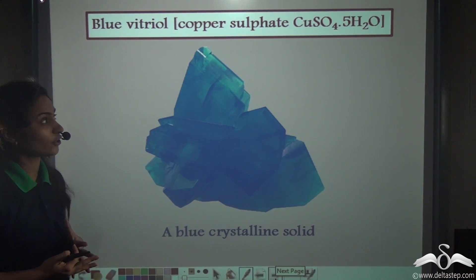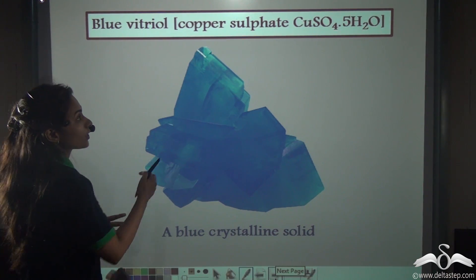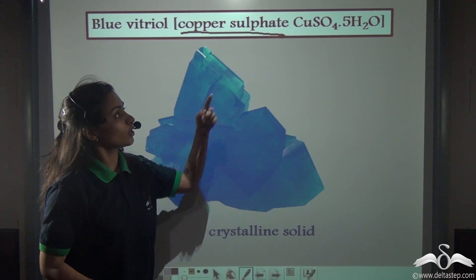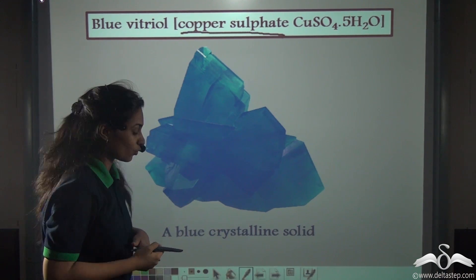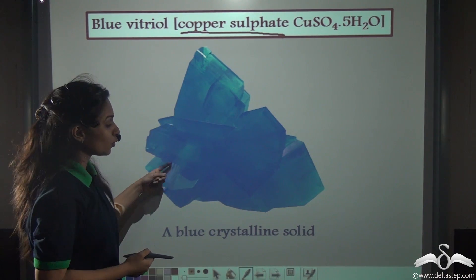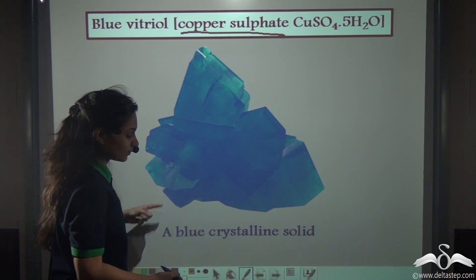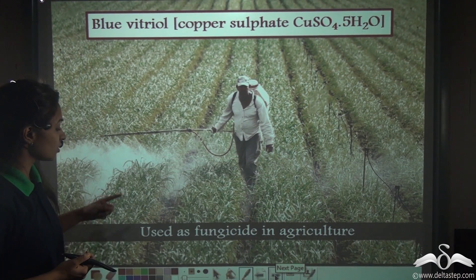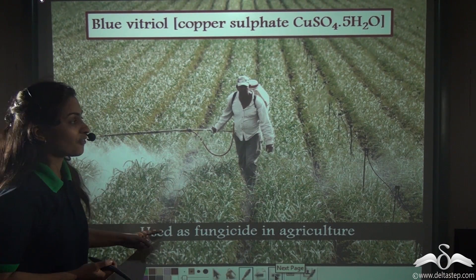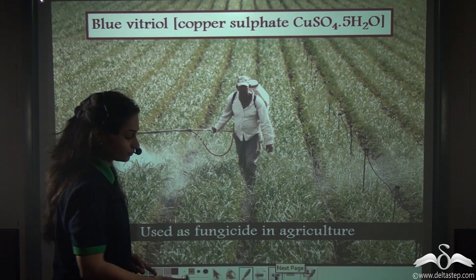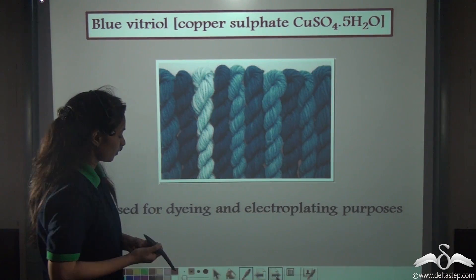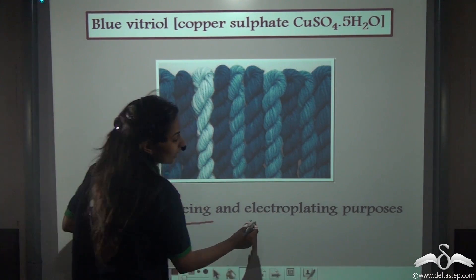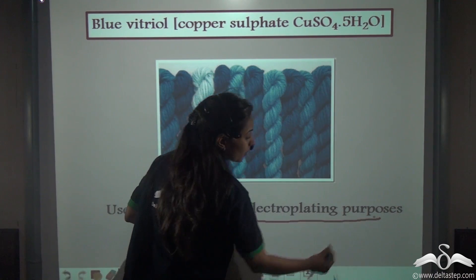Next we have blue vitriol, or copper sulphate, which is CuSO4.5H2O. This is a blue crystalline solid. It is used as a fungicide in agriculture, and it is also used for dyeing and electroplating purposes.